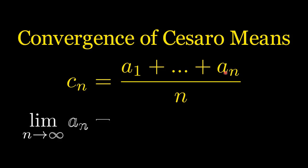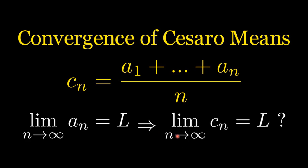We will show that if the limit of A sub n equals L, then the limit of C sub n equals L. We will show that if the sequence A sub n converges to L, then the sequence C sub n also converges to L, using the definition of convergence with epsilon. Before doing the proof of the Cesàro theorem, I remind the definition of a limit of a sequence using epsilon.